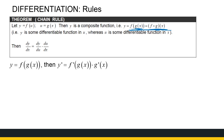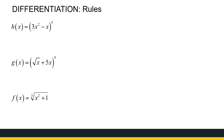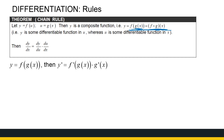Here are some examples of the composition of two functions: (3x² - x) to the power 5, which is the composition of x⁵ with 3x² - x; similarly to the power 9; and the cube root of x² + 1. To find the derivative of the composition, the chain rule says: f'(g(x)) times g'(x) — the derivative of the outside function evaluated at the inside, times the derivative of the inside.